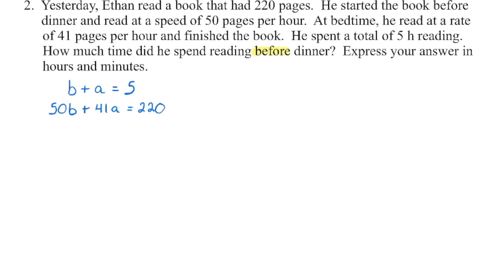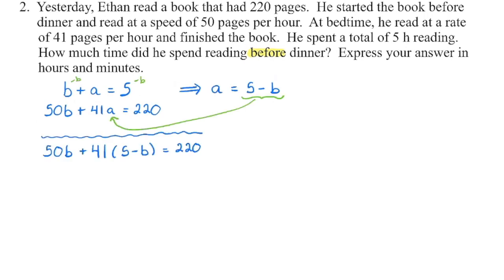Now the question doesn't specify how we have to solve it. If it says algebraically, we need to do elimination or substitution. So you could rearrange this into either A equals or B equals and graph it, or you could also solve it algebraically. Ultimately we're trying to figure out the amount of time he spends reading before dinner. So that B is the variable I'm solving for. Knowing that we have a coefficient of one, I would probably solve by substitution. Because I need that B in my equation, I chose to isolate A so that I can substitute this piece in the second equation in the place of A.